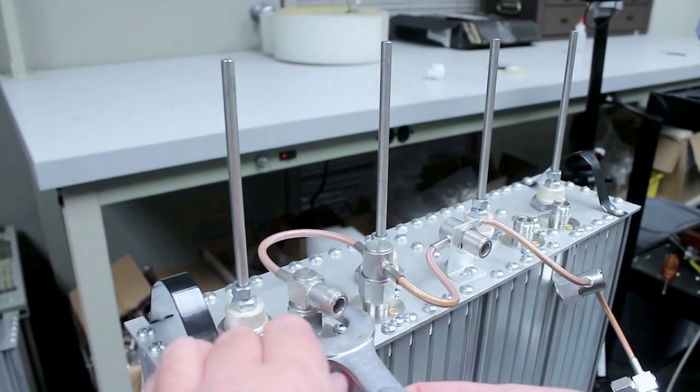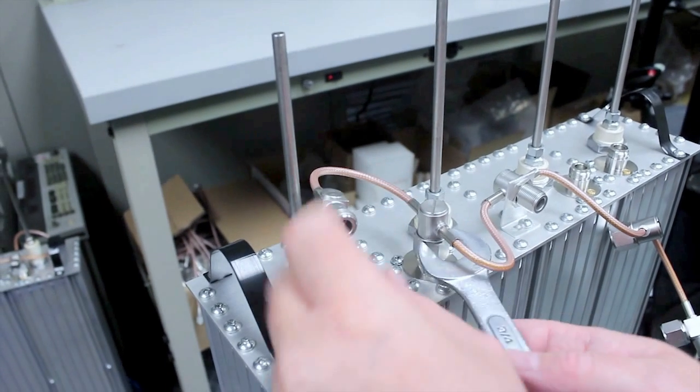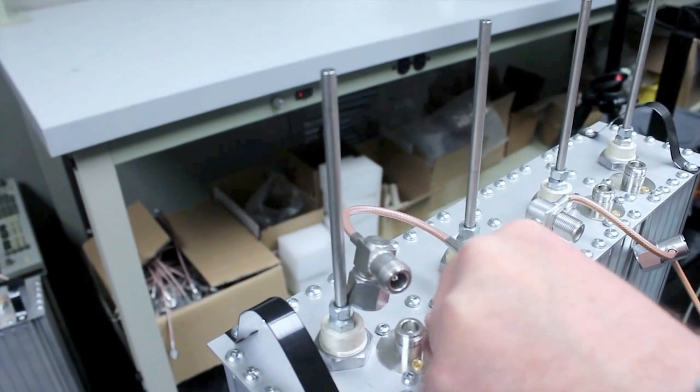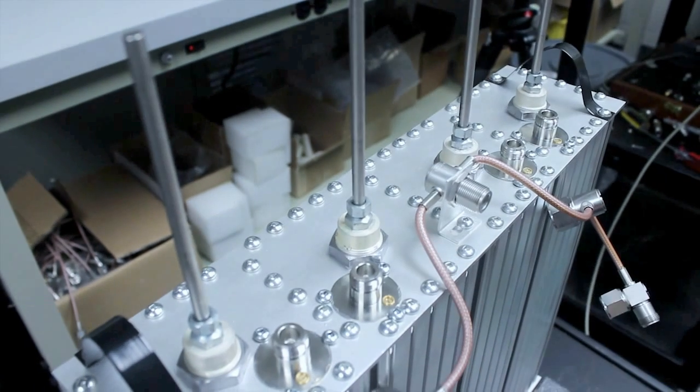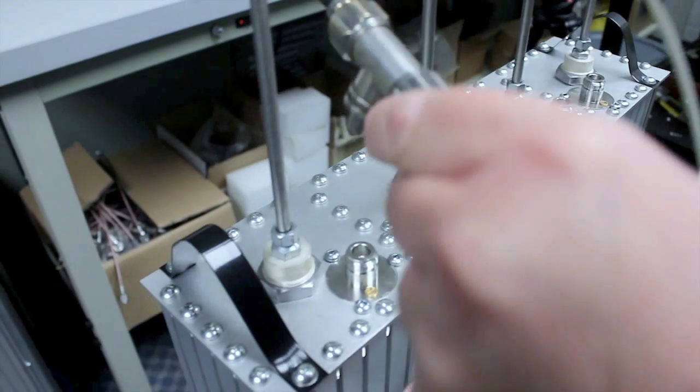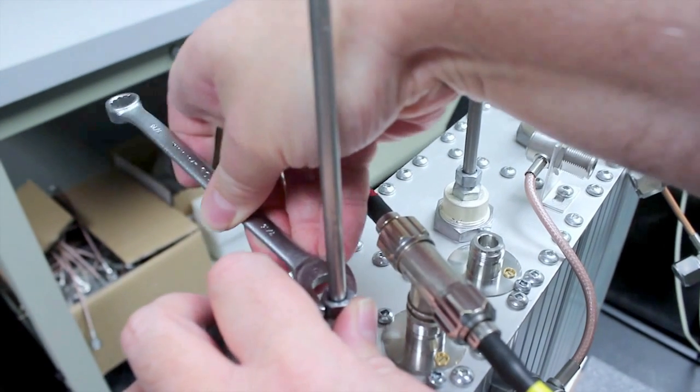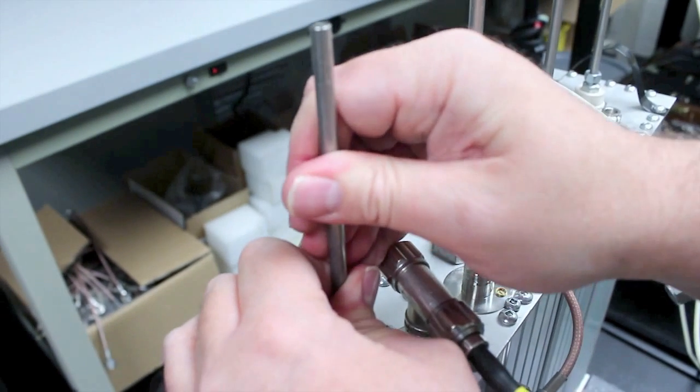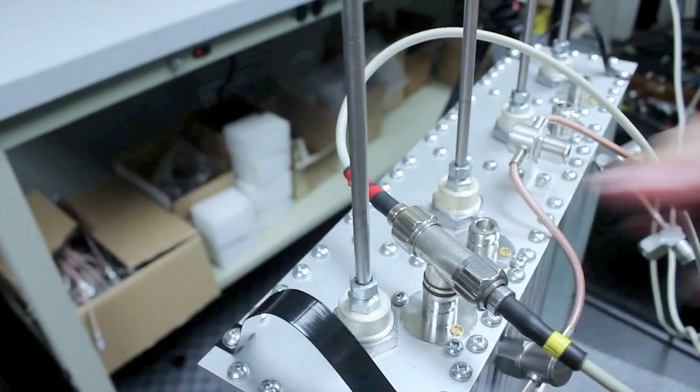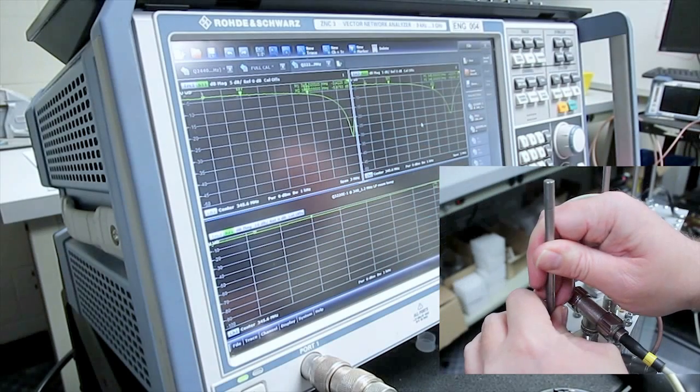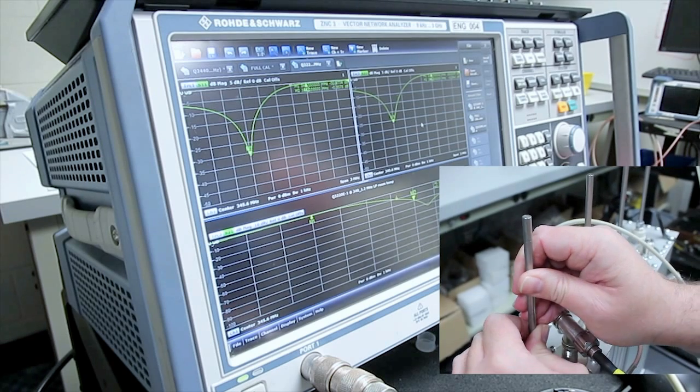Now we are going to tune the low-pass stage. Again, removing the cable section so we can tune the cavities independently. And again, attaching the T connector. Now we are going to loosen the top nut. And we see here the return loss for this stage. We are tuning to the lower frequency, and the notch should be at the higher frequency.